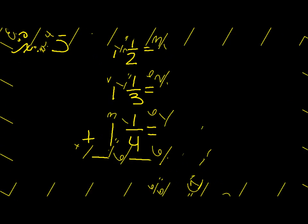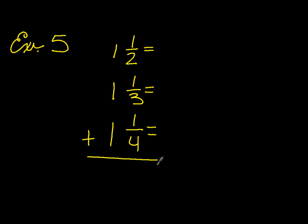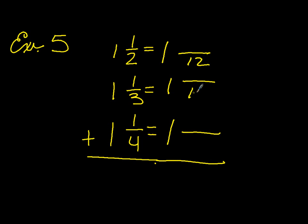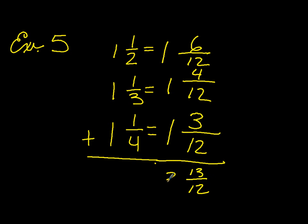Our next sample, example number five — some mixed numbers. Again, bring over your whole number first. And we're going to come up with a common denominator. In this case, it doesn't happen to be any of our denominators, but we can quickly figure out that the common denominator is twelve. Six goes into twelve six times. Six times one is six. Three into twelve four times. Four times one is four. And four into twelve three times. Three times one is three. So we add them up. We end up with thirteen-twelfths and three for our whole number.